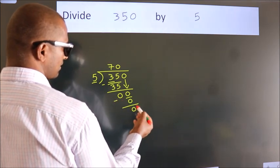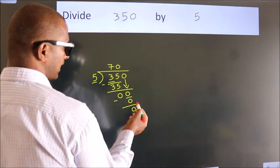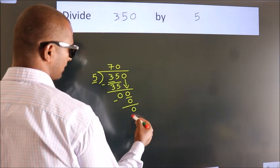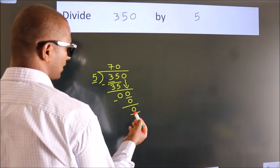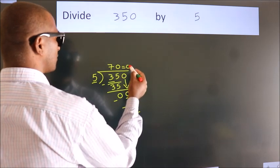After this, there are no more numbers to bring down. We got remainder 0. So this is our quotient.